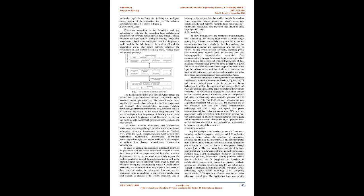The network layer solves the problem of transmitting the data obtained by the sensing layer within a certain range, usually long distance, and mainly completes the access and transmission functions, which is the data pathway for information exchange and transmission. It can rely on various existing communication networks, including public telecommunication networks and the Internet, as well as industry-specific communication networks. Data communication is the core function of the network layer, which needs to ensure the lossless and efficient transmission of data, including communication protocols such as ZigBee, Sigfox, and Wi-Fi, and other communication support functions. The network layer also includes access to devices such as IoT gateways, device authentication, and other device management and security management functions.